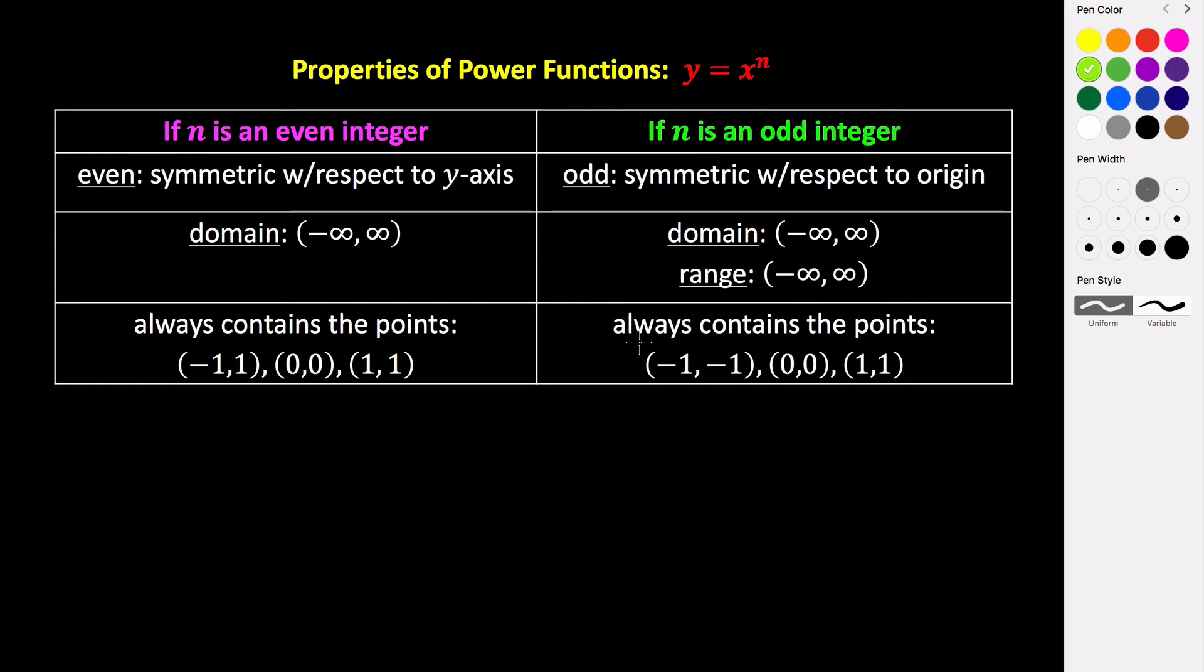Odd power functions are always going to contain the points (-1,-1), (0,0), and (1,1).